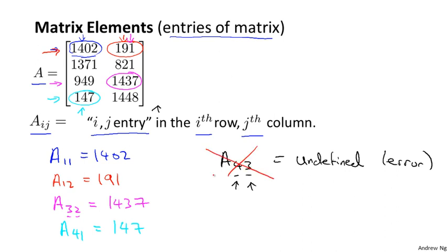So there's no such element as A_43. So you shouldn't be referring to A_43. So the matrix gives you a way of letting you quickly organize, index, and access lots of data.